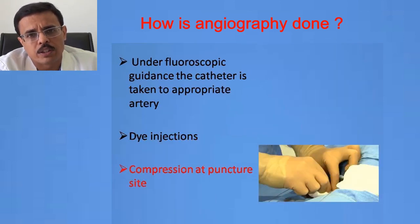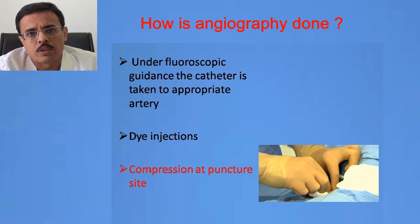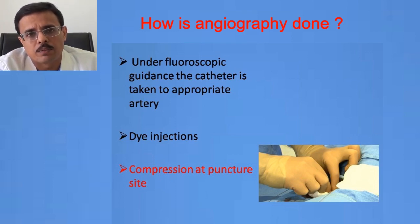After the procedure, which commonly takes 15 to 30 minutes, the catheter is taken out and compression — a little pressure — is applied for 10 to 15 minutes to close the puncture site. A small bandage is applied, which can be removed the next day.